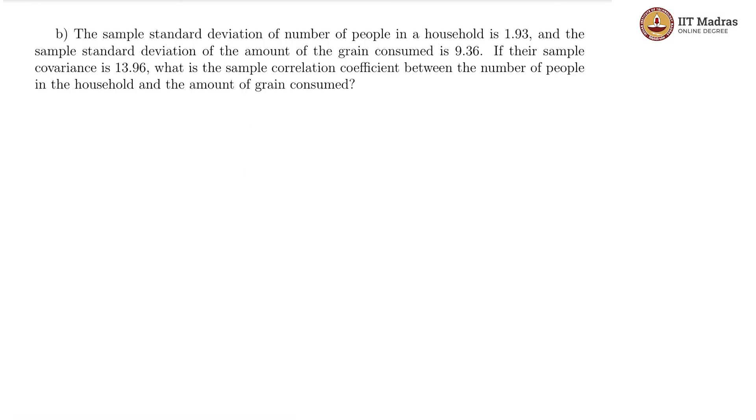In the second part of the question, we are being asked what is the sample correlation coefficient. And what is given is the sample standard deviation of number of people which is 1.93 and sample standard deviation of the amount of grain which is 9.36. And lastly, the sample covariance is also given to us which is 13.96.